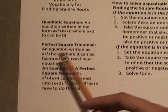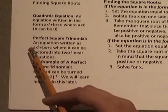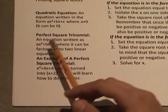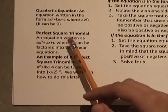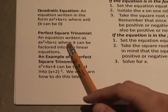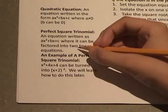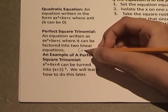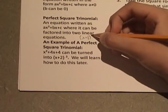A perfect square trinomial is an equation written as ax squared plus bx plus c, where it can be factored into a linear equation. For example, x plus 1 squared.